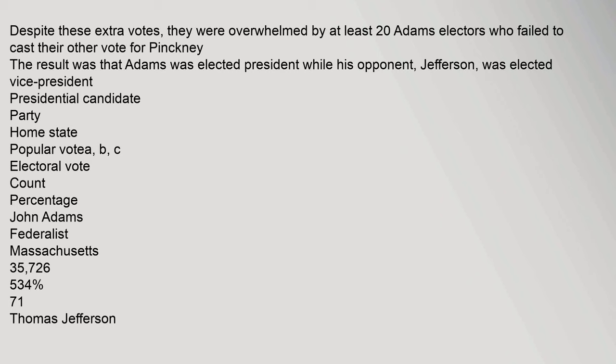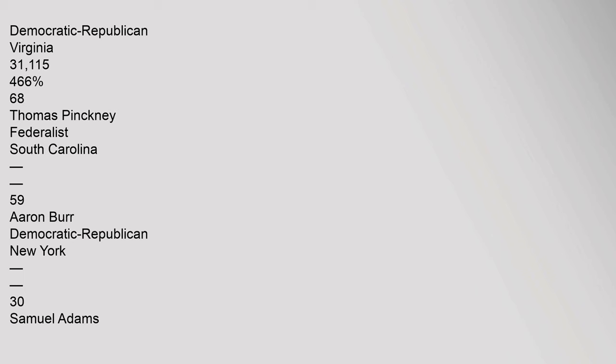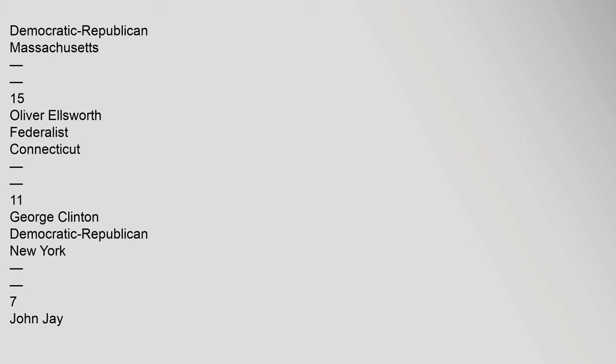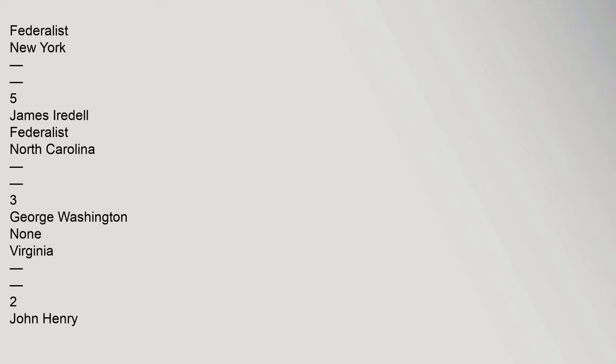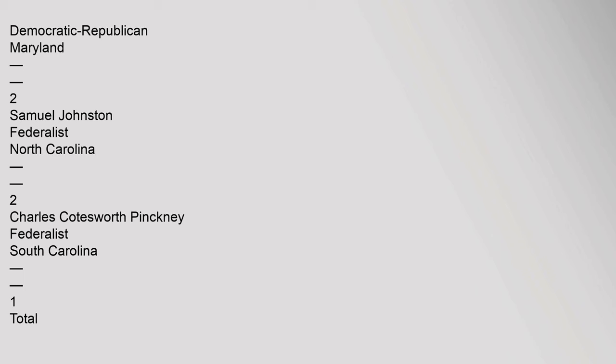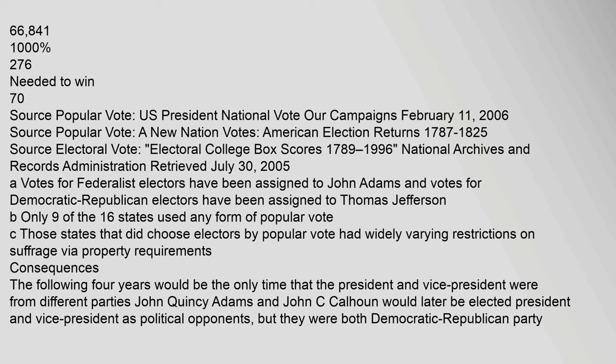Presidential election results: John Adams, Federalist, Massachusetts — 35,726 popular votes (53.4%) and 71 electoral votes. Thomas Jefferson, Democratic-Republican, Virginia — 31,115 popular votes (46.6%) and 68 electoral votes. Thomas Pinckney, Federalist, South Carolina — 59 electoral votes. Aaron Burr, Democratic-Republican, New York — 30. Samuel Adams, Democratic-Republican, Massachusetts — 15. Oliver Ellsworth, Federalist, Connecticut — 11. George Clinton, Democratic-Republican, New York — 7. John Jay, Federalist, New York — 5. James Iredell, Federalist, North Carolina — 3. George Washington, None, Virginia — 2. John Henry, Democratic-Republican, Maryland — 2. Samuel Johnston, Federalist, North Carolina — 2. Charles Coatsworth Pinckney, Federalist, South Carolina — 1. Total: 66,841 popular votes, 276 electoral votes; 70 needed to win.